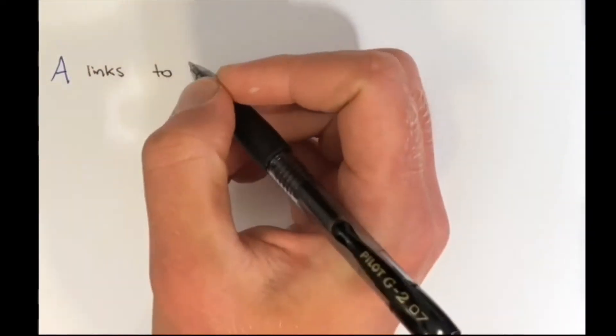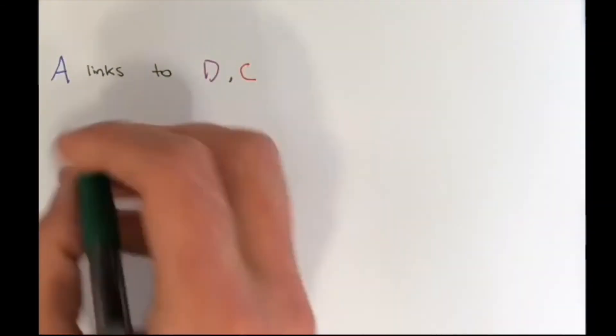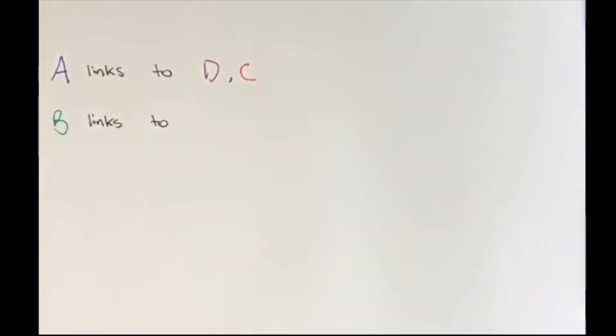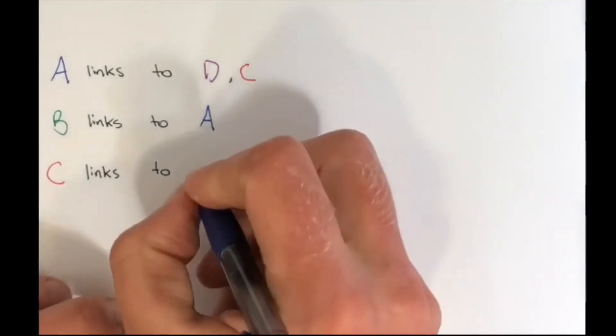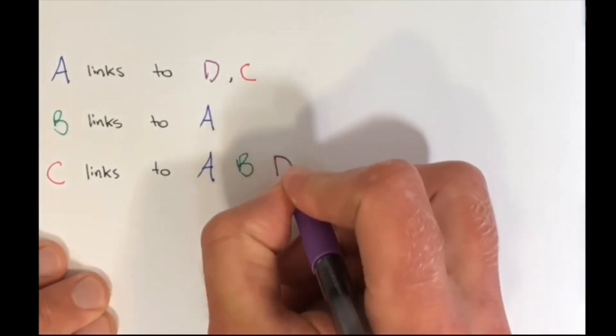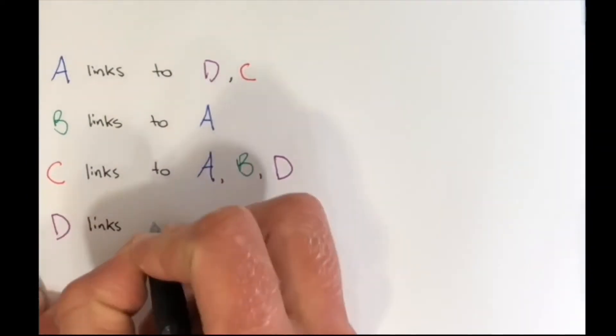Now we can rewrite that to show which websites linked to which. We see A links to D and C. We see B links to only A. C links to A, B, and D. And last, D links to B and C.